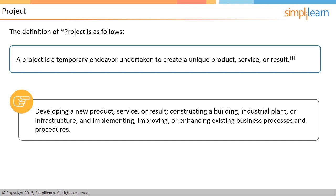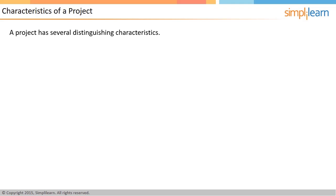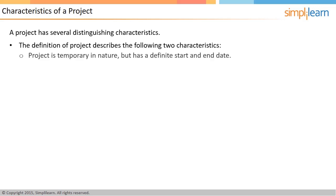A project can be distinguished based on its characteristics. The definition describes two characteristics of a project. First, it is temporary in nature. Temporary here does not mean short in duration. A project can extend for long duration based on the requirements — for example, creating a new indigenous missile defense system for a country. However, there is always a definite planned start and end date for a project; it cannot go on indefinitely.